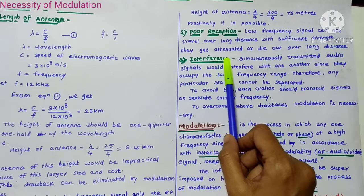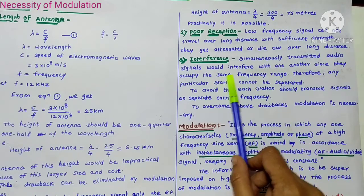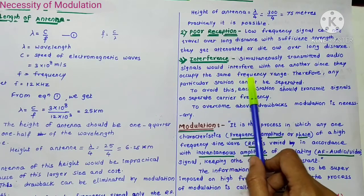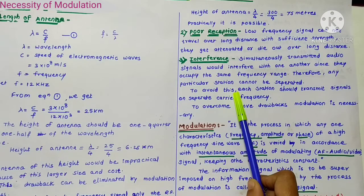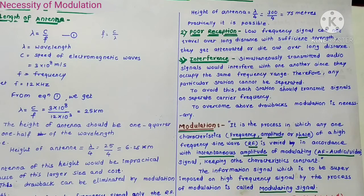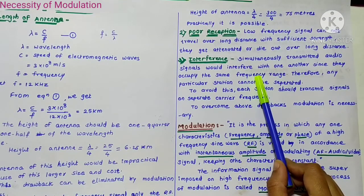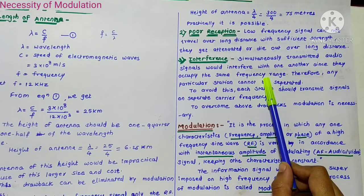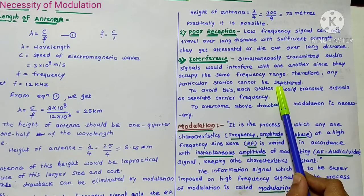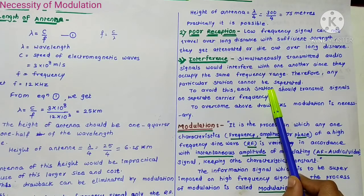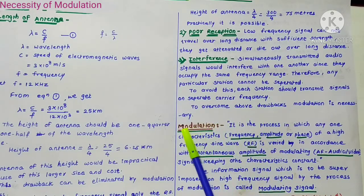The third reason is interference. When audio signals are simultaneously transmitted, they would interfere with one another since they occupy the same frequency range. Therefore, any particular station cannot be separated. To avoid this, each station should transmit its signal on a separate carrier frequency. If more than one transmitting station in a city transmits these signals, they would get mixed up with no way to select one station. This separation is possible only through the modulation process.